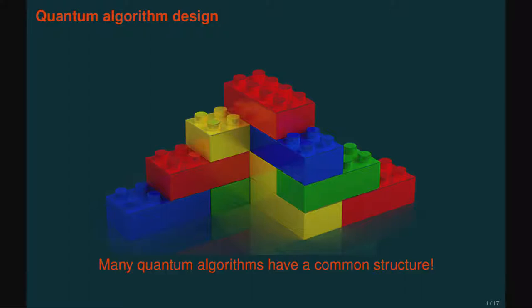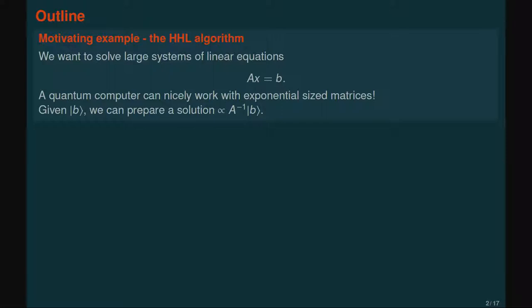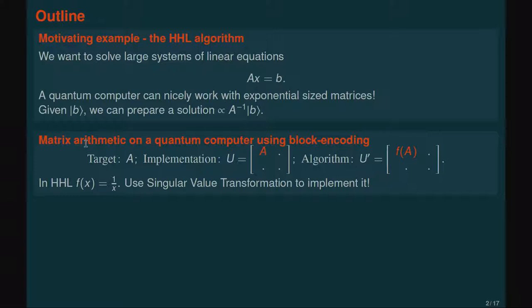Many quantum algorithms can be cast in very similar terms and have very common structures. A motivating example for the framework is the HHL algorithm, where we want to solve a large system of linear equations Ax equals B. The input is B and the matrix, and we want to solve this in a quantum sense — maybe B is given as a quantum state — and the task is to prepare a quantum state proportional to the solution A inverse B.